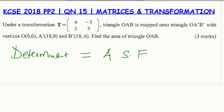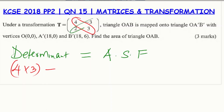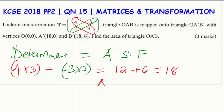To find the determinant of the transformation matrix, we take the product of the main diagonal, which is 4 times 3, then subtract the product of the other diagonal, which is negative 3 multiplied by 2. This gives 12 minus (−6), which equals 18. So the determinant is 18, and therefore the area scale factor is 18.